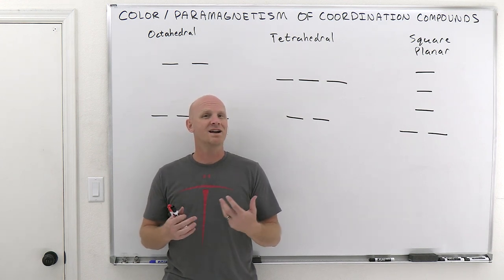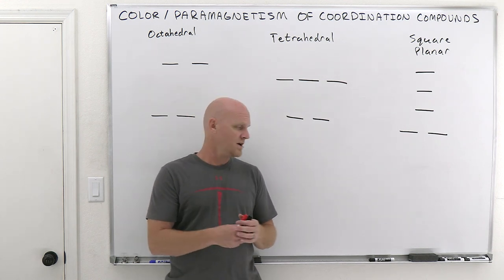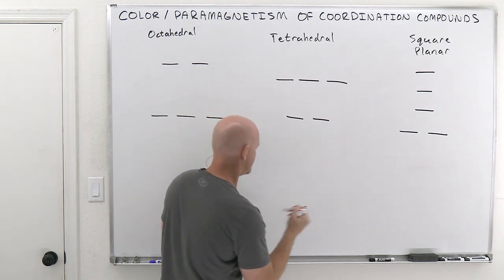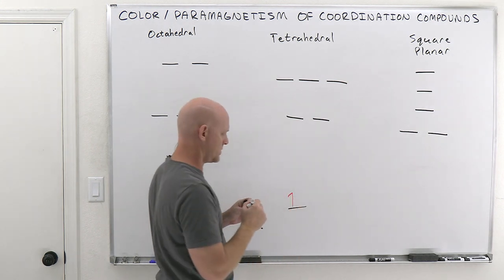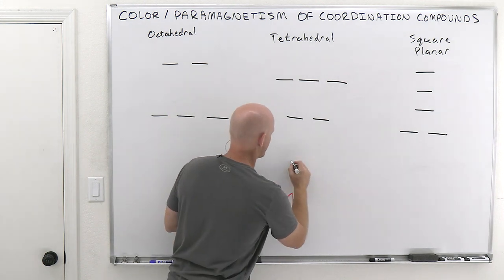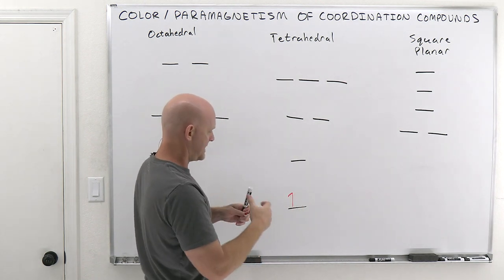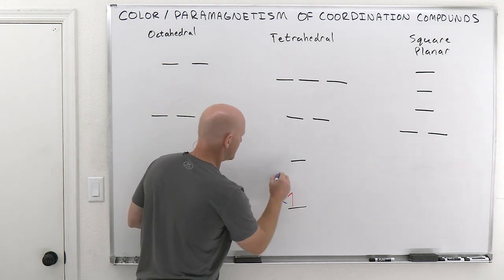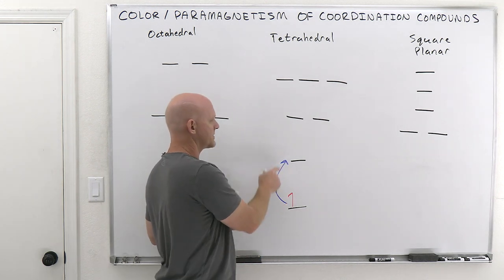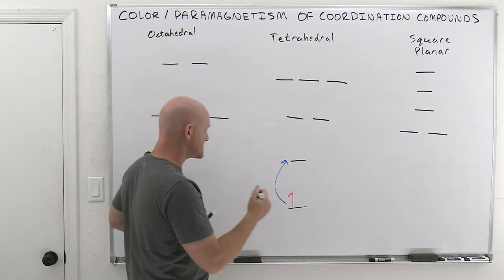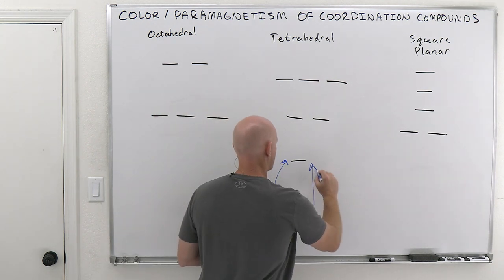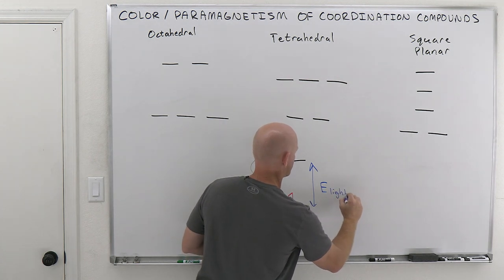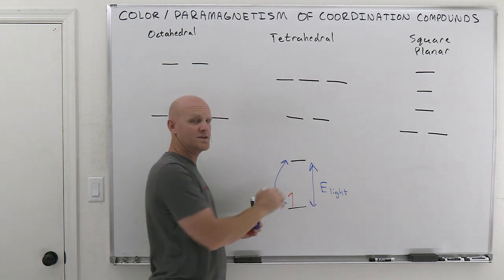You've got to understand the nature of color in a compound. What's really going on here is you're going to have a low energy orbital with an electron in it, and then a higher energy orbital above it. When you absorb light of just the right energy, you might end up promoting an electron from this lower energy orbital to this higher energy orbital. The energy of that light is going to correspond perfectly to this gap in energy between these two orbitals.